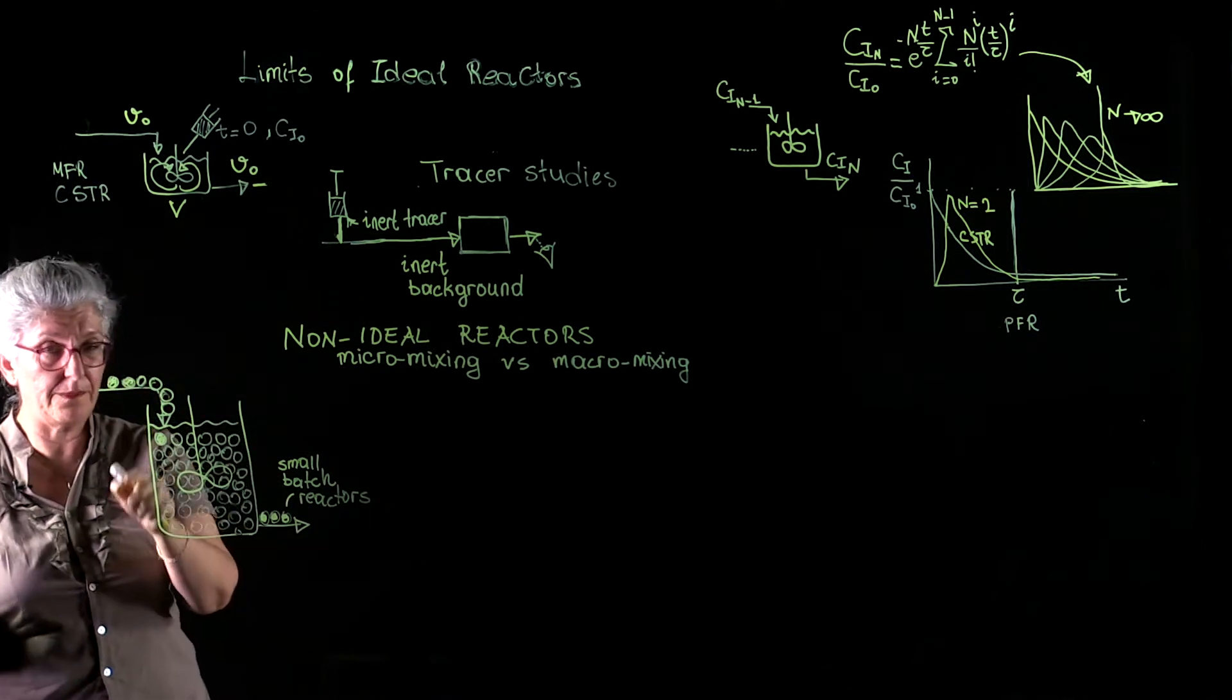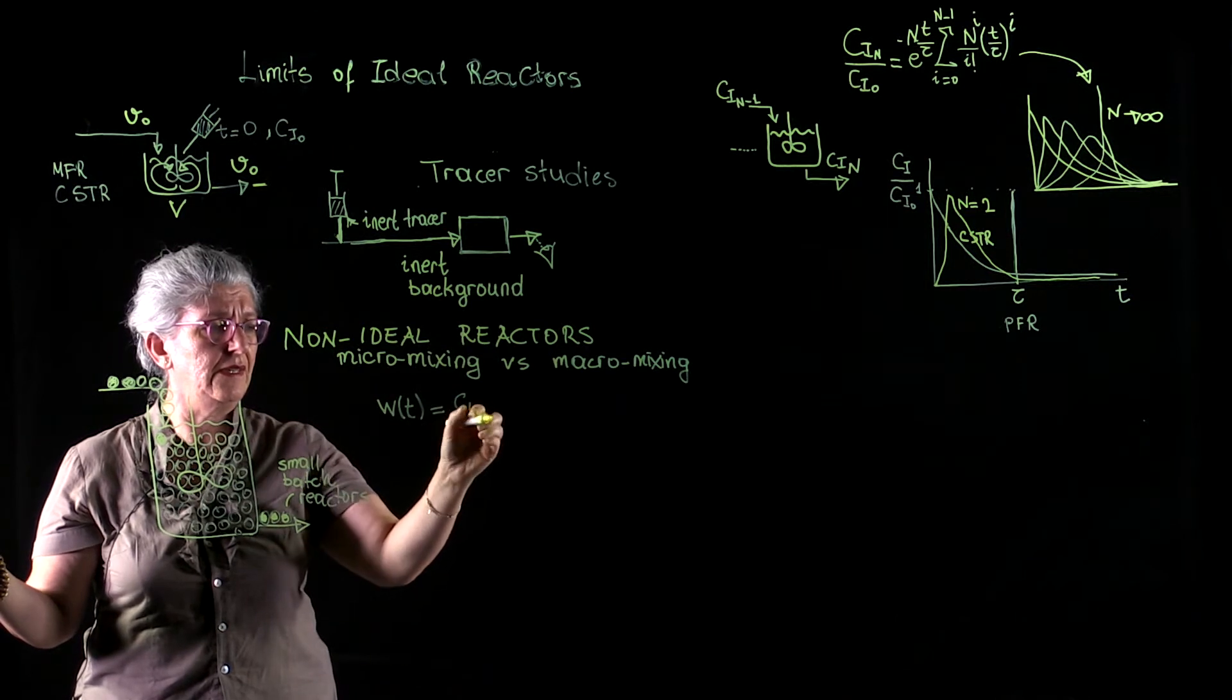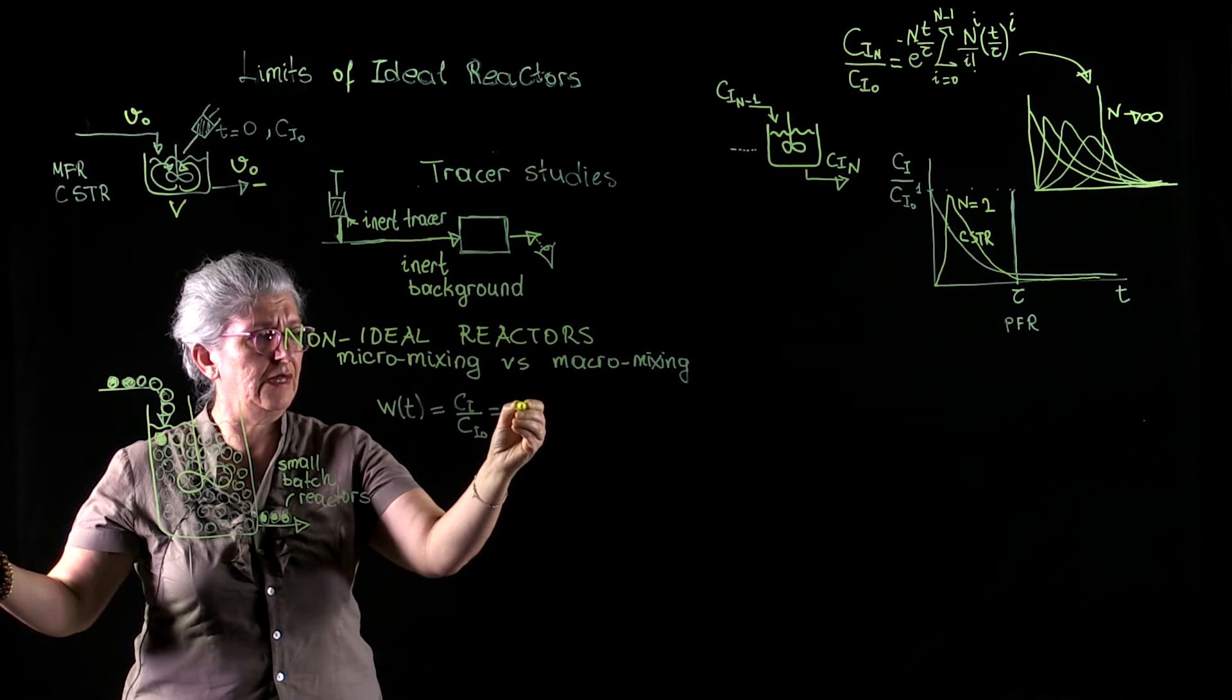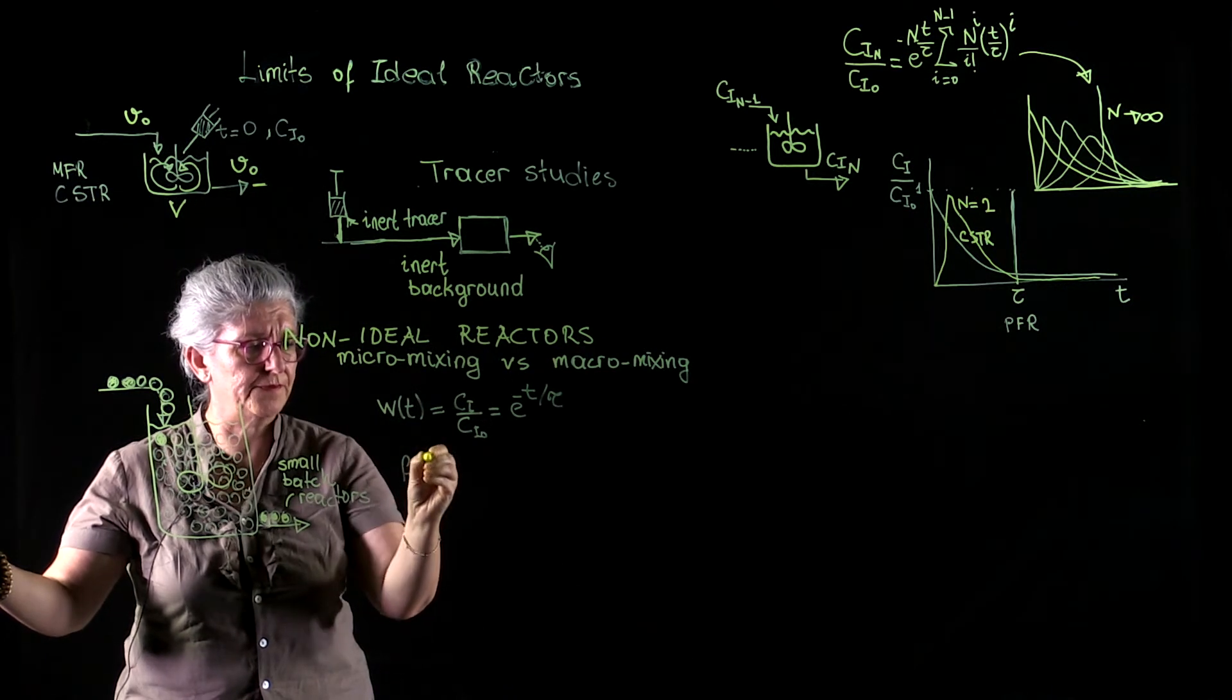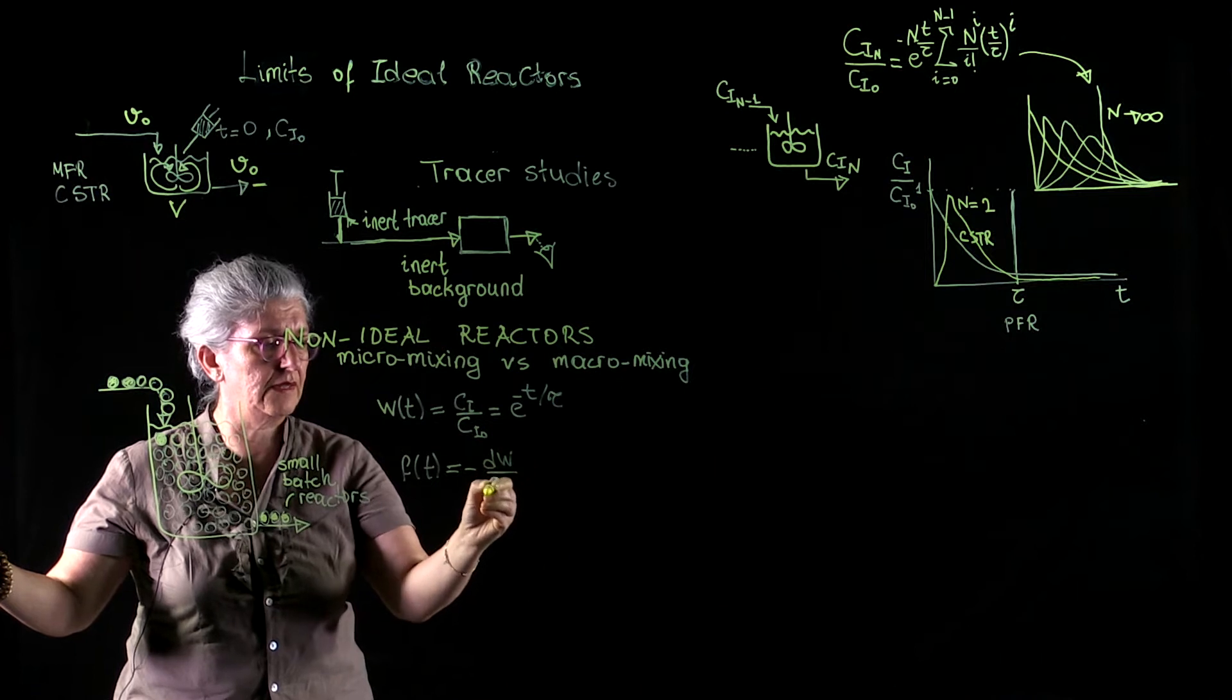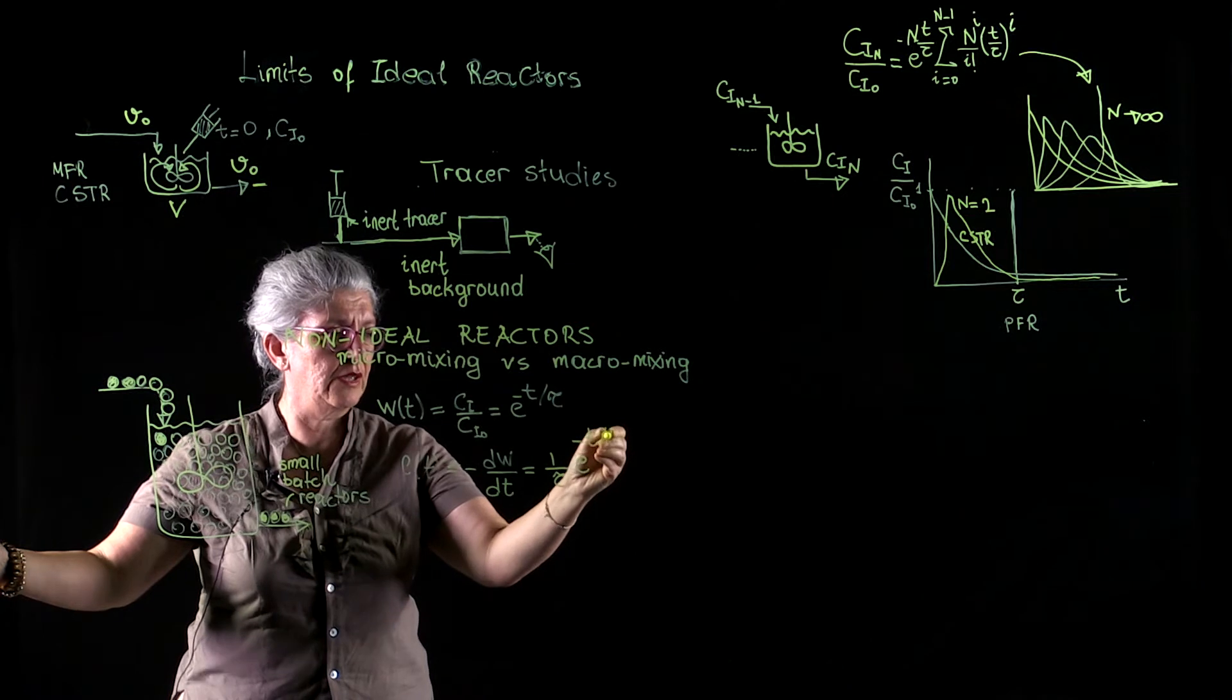And we have a perfect CSTR here with a washout function of ci over ci zero to be equal to e to the minus t over tau, or f of t. f of t was the density function, which is equal to minus dw over dt. And that is equal to 1 over tau, e to the minus t over tau.